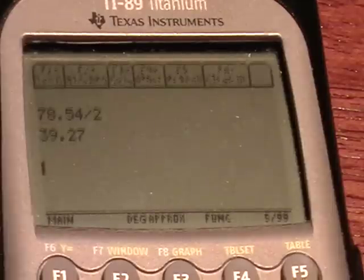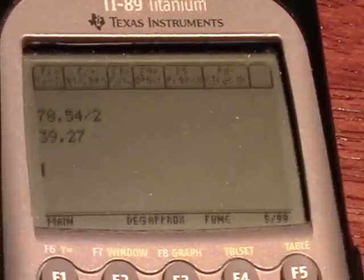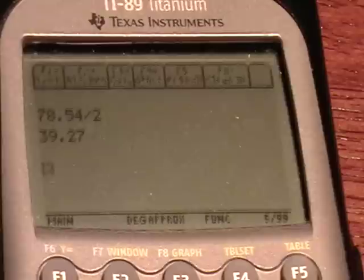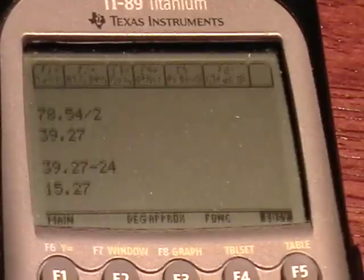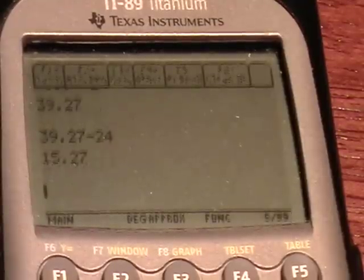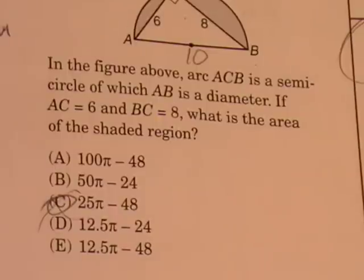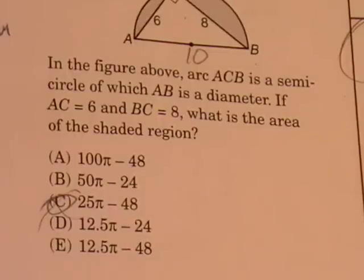Then we'll subtract the area of our triangle, which is 39.27 minus 24, the area of the triangle, and we get 15.27. 15.27 most closely matches option D.